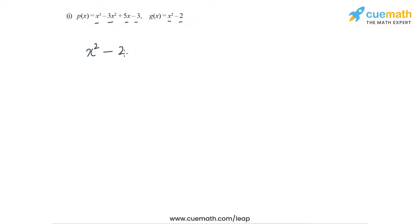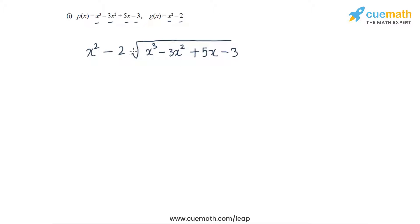In Part 1, the dividend polynomial is x³ - 3x² + 5x - 3 and the divisor polynomial is x² - 2. Let's write our divisor polynomial x² - 2, then write our dividend polynomial x³ - 3x² + 5x - 3, and start the long division process.